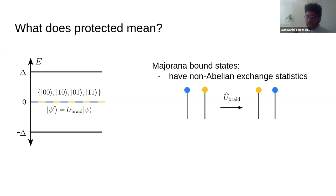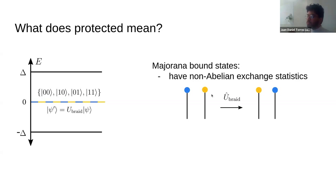The answer to how we operate inside the protected subspace relies on the fact that Majoranas have non-Abelian exchange statistics. This means that if you exchange the position of two Majoranas, in contrast to typical quantum particles that acquire a plus or minus sign, they transform to a different state. The operation of swapping two Majoranas generates a unitary transformation in the degenerate subspace. This is especially interesting because it is a discrete operation — the rotation in the subspace is protected. There are no errors when you swap the position of two Majoranas, unlike other qubit platforms where operations are continuous.